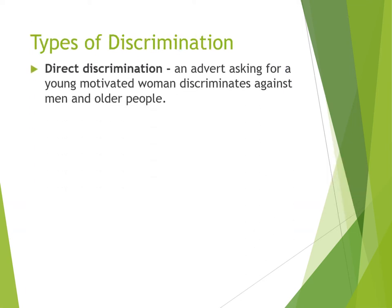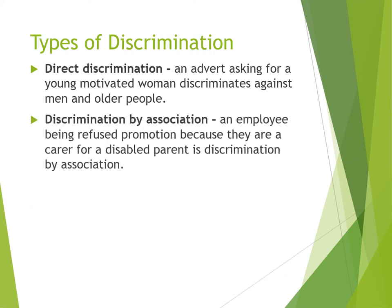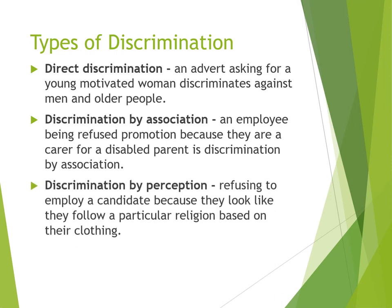There are different types of discrimination. Direct discrimination — for example, an advert asking for a young motivated woman — discriminates against men and older people. Discrimination by association occurs when an employee is refused promotion because they are a carer for a disabled parent; the discrimination is against them because of someone they're associated with. Discrimination by perception means refusing to employ someone because they look like they follow a particular religion based on their clothing, or perhaps because of tattoos or piercings.